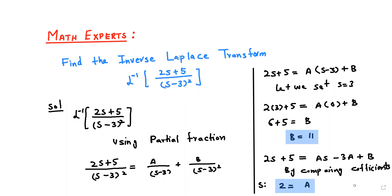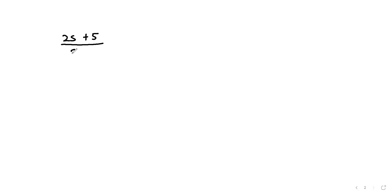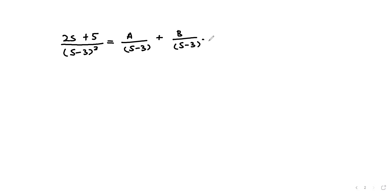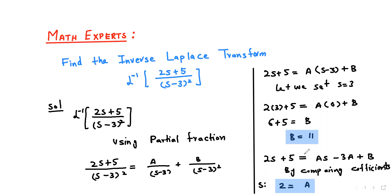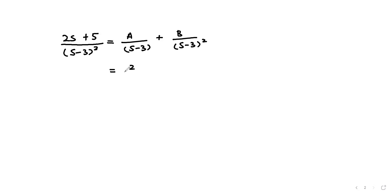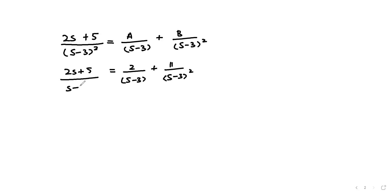After getting the values A = 2 and B = 11, we substitute them back. Our equation becomes: (2s + 5) over (s minus 3) whole square = 2 divided by (s minus 3) plus 11 divided by (s minus 3) whole square.